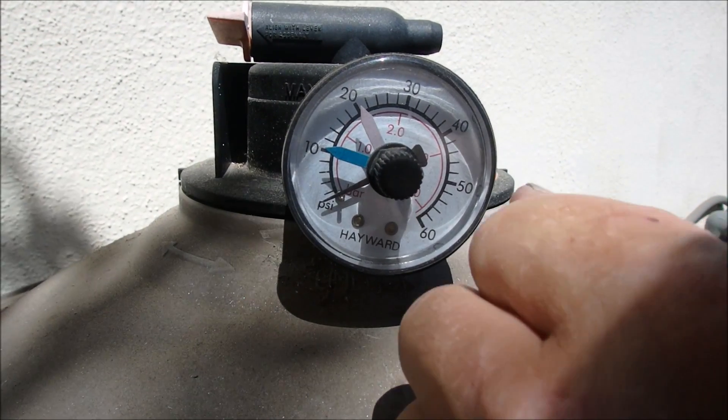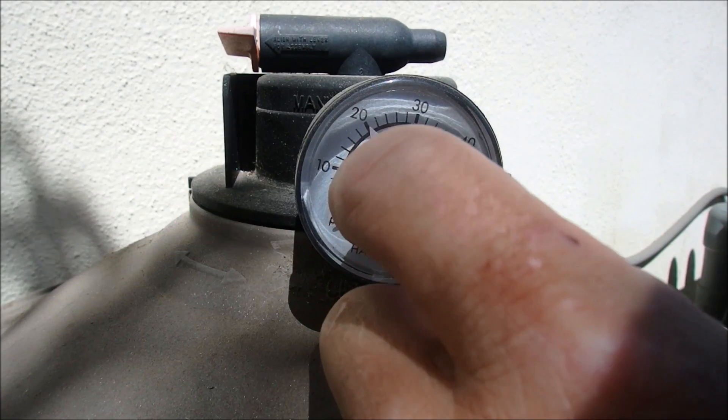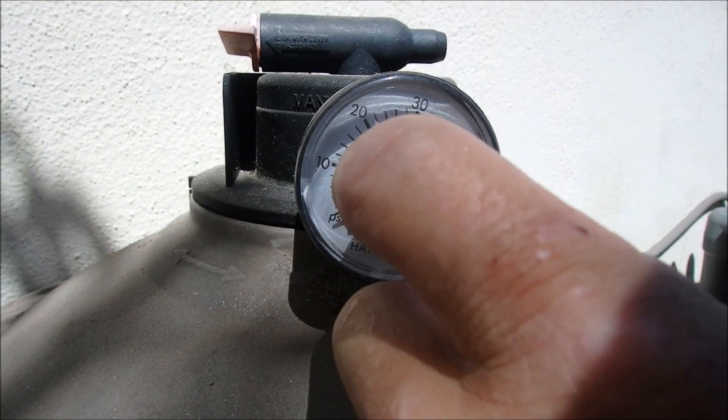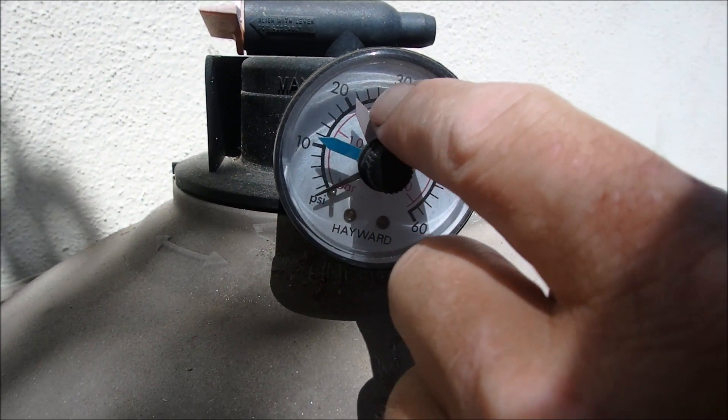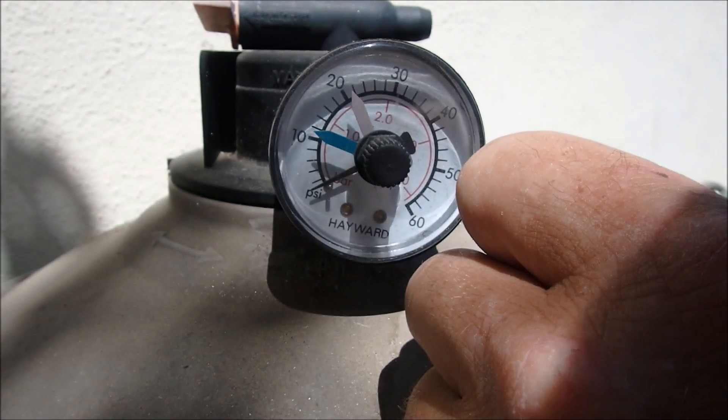Some filters have a clean and dirty indicator like this one here. You simply move this dial with your hand here. After you clean your filter you can set it at the clean mark. When it gets to this mark here you know you need to backwash or take the filter apart and clean it.